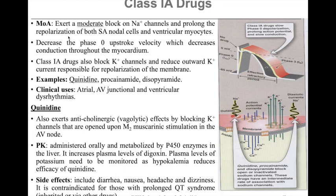Class 1a drugs exert moderate block on sodium channels and prolong the repolarization of both the SA nodal cells and the ventricular myocytes. They decrease the phase 0 upstroke velocity in myocardial cells, which decreases conduction throughout the myocardium. Class 1a drugs also have the ability to block potassium channels, thereby reducing the outward potassium current responsible for repolarization of the membrane. Examples include quinidine, procainamide, and disopyramide. Clinically, they can be used to treat atrial, AV junctional, and ventricular dysrhythmias.